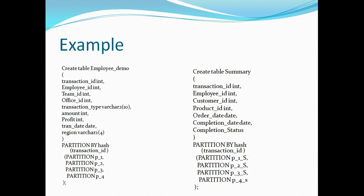Here I have two tables — employee demo and summary — both partitioned using the same strategy: hash partitioning on the same partitioning key transaction ID, with the same number of partitions: four. Using our mod example: when the first sale creates a record with transaction ID 1, it gets inserted into partition P1 for employee demo and P1s for the summary table. The second row goes into P2 and P2s, and so on. When we reach transaction ID 5, it is inserted into partition 1 in both tables.